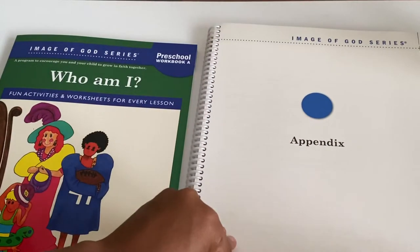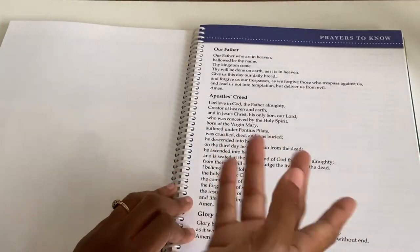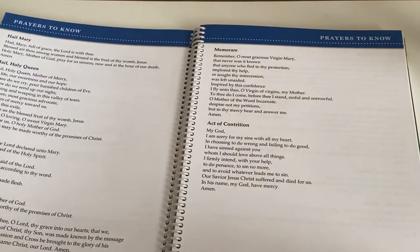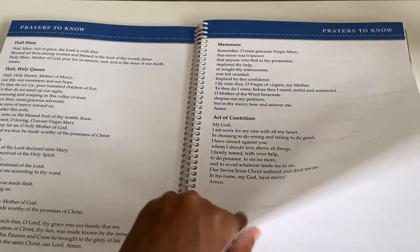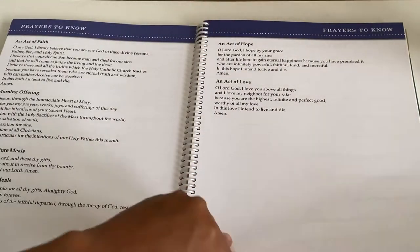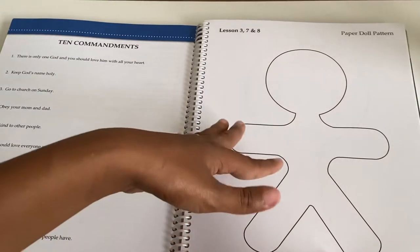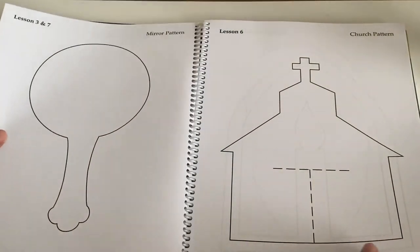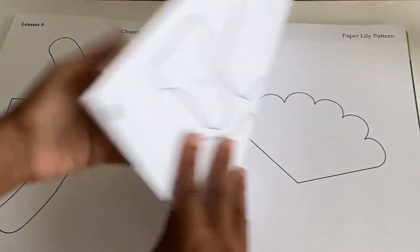Here at the back is the appendix — all the prayers that you need to know. And these are the different extra projects depending on the lessons. So that's just what's here in the back. And that's it for the teacher's manual.